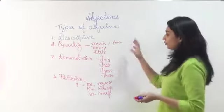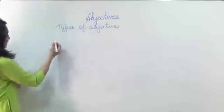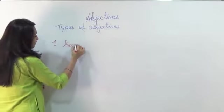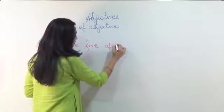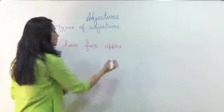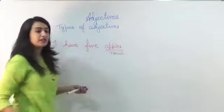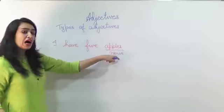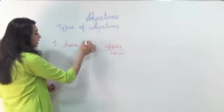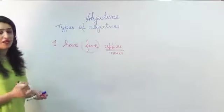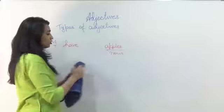Now let's have few examples from each category. So let me say I have five apples. Apples is a noun. And how am I describing it or what kind of information am I giving?